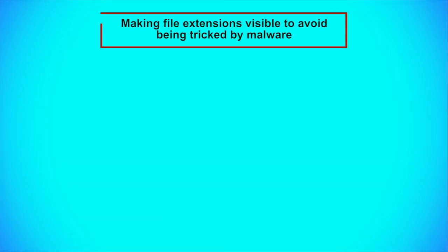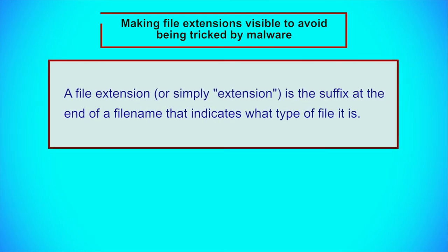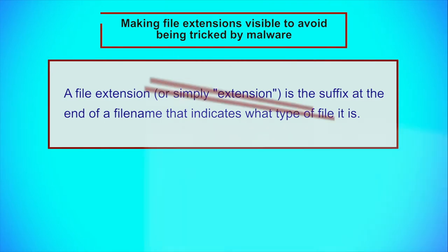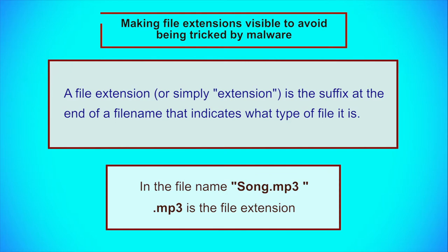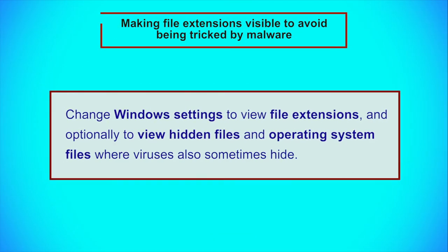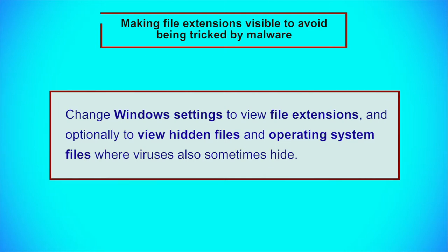Now let us see how to make file extensions visible to avoid being tricked by malware. File extensions are part of filenames which tell the operating system which type of file it is and what application to use to open it. For instance, for a file named song.mp3, the .mp3 portion tells the computer it is an MP3 music file and can be opened by your default music player. By default, Windows hides this extension and some malware exploits this setting by attempting to make its file appear to be a different type than it actually is. You can change Windows settings to view file extensions and optionally view hidden files and operating system files where viruses also sometimes hide.